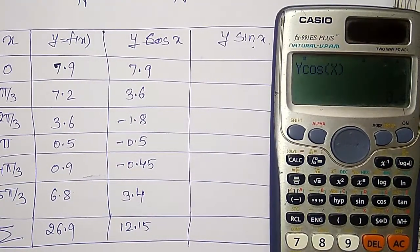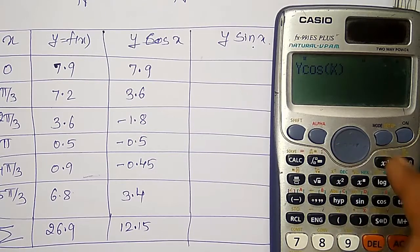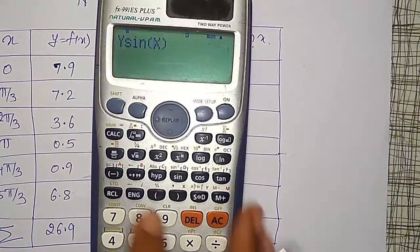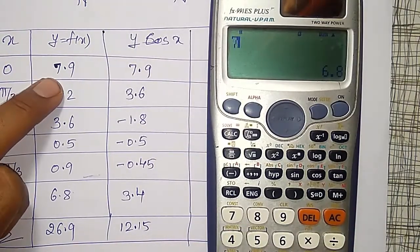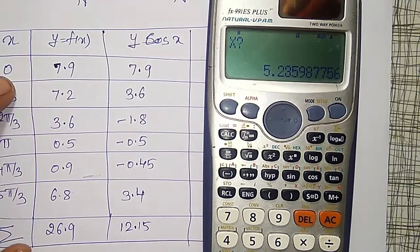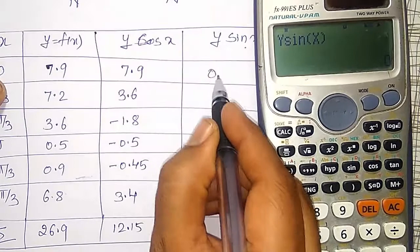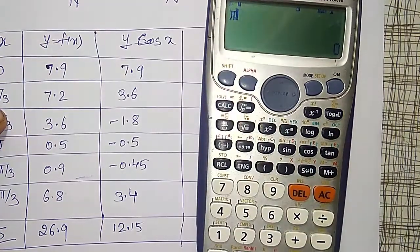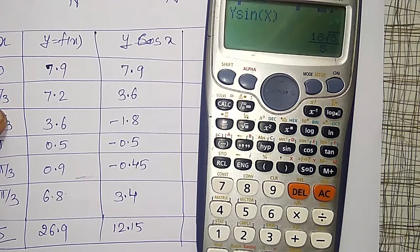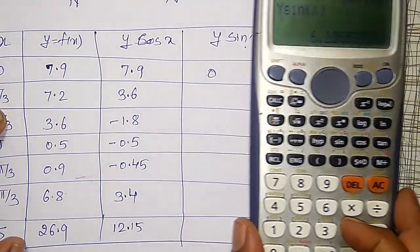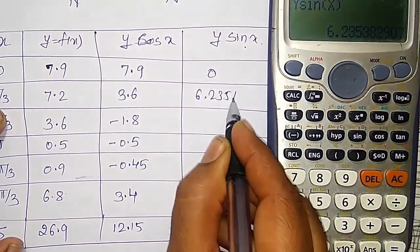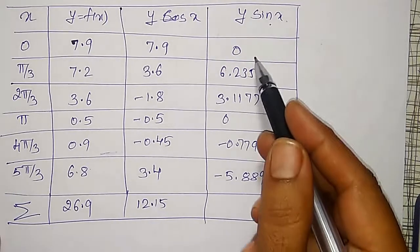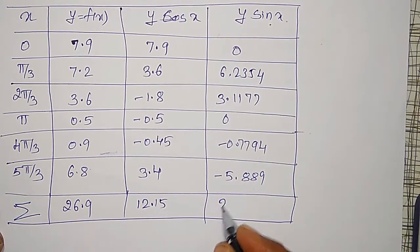Similarly, you have to go for y sin x now. Only in this function, in spite of cos, I will change it as sine. Then next, go on operating calc option. First it will ask for y, y is 7.9, and press equal to, x it will ask, it is 0, and its value comes out to be 0. Next, again press equal to, y it will ask, 7.2, and it will ask for x also, that is shift π divided by 3, and it comes out to be 6.2354 I will write. Like this, everything I will calculate, summation also I will calculate. From the calculator, I will calculate all these things, and then total it comes out to be 2.6847. All these are summation values used in a_naught.